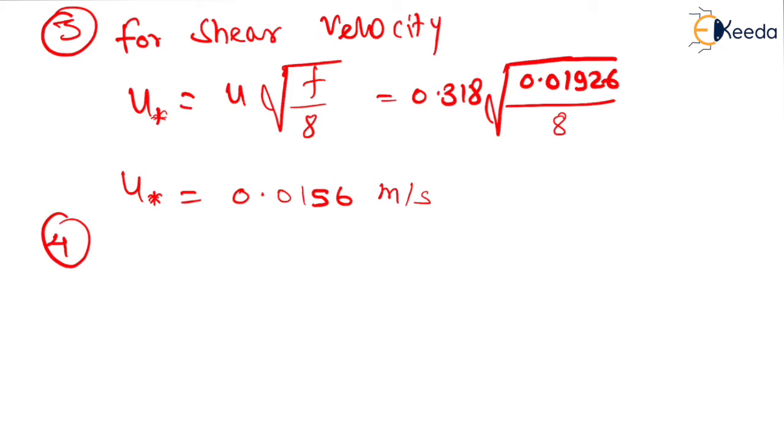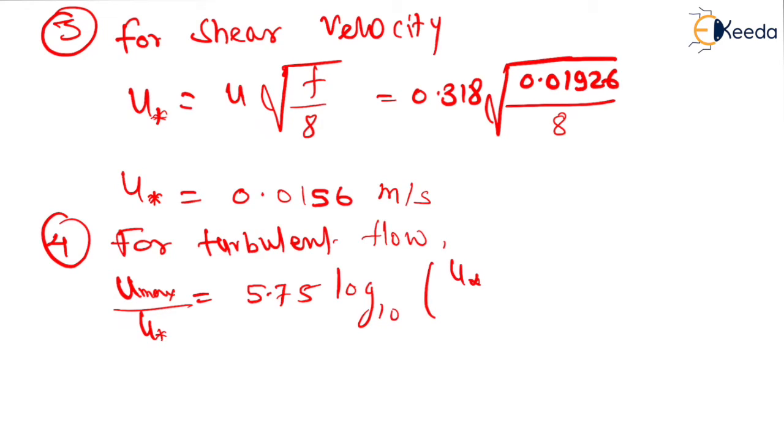To calculate the next term, we will use the basic relation to calculate velocity. For turbulent flow, umax upon u* equals 5.75 log₁₀(u*Y/ν) plus 5.5. This formula requires relation in terms of Y. Firstly we have to find out the value of Y. Y equals D/2, that is equal to 0.4 upon 2, that is equal to 0.2.